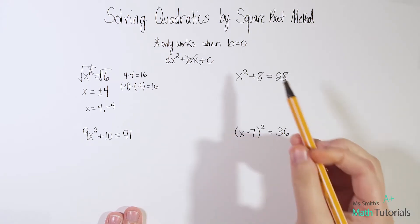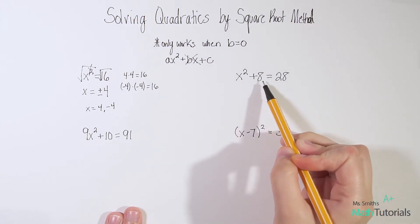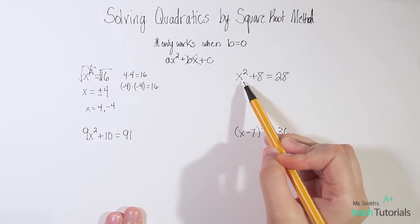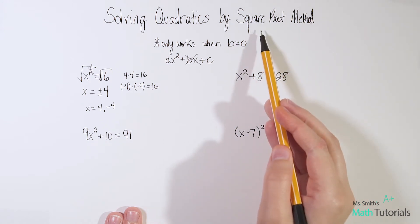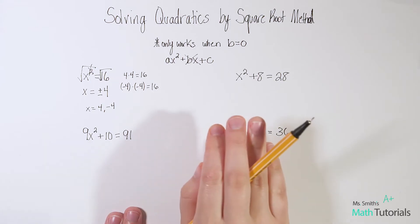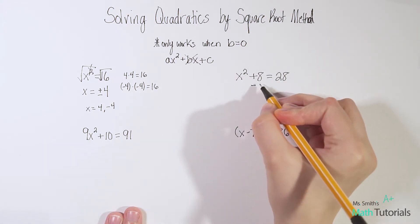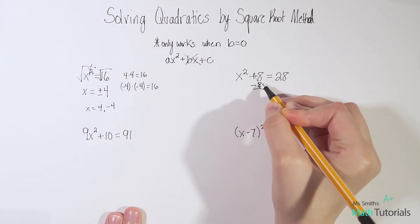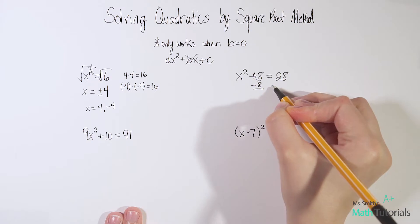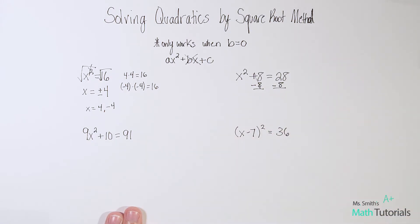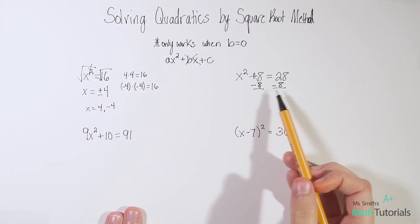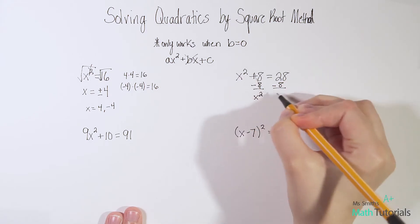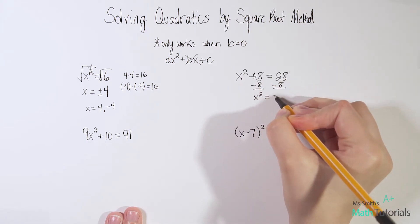Let's look at another example. We've got x squared plus 8 equals 28. Notice my x squared is not alone — it's got this plus 8 with it. In order for the square root method to work, I need the x squared totally alone. So I want to subtract 8 from both sides using inverse operations — it cancels to 0 on the left. So I have x squared equals 28 minus 8, which is 20.